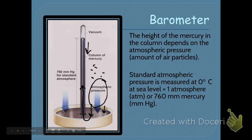The atmospheric pressure at sea level is one atmosphere — we call it one atmosphere — and that's equal to 760 millimeters of mercury. So the height of mercury in the barometer at sea level is 760 millimeters.